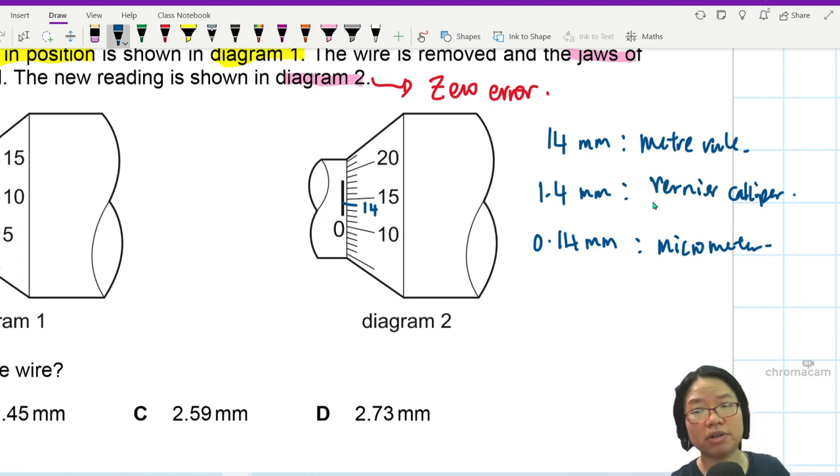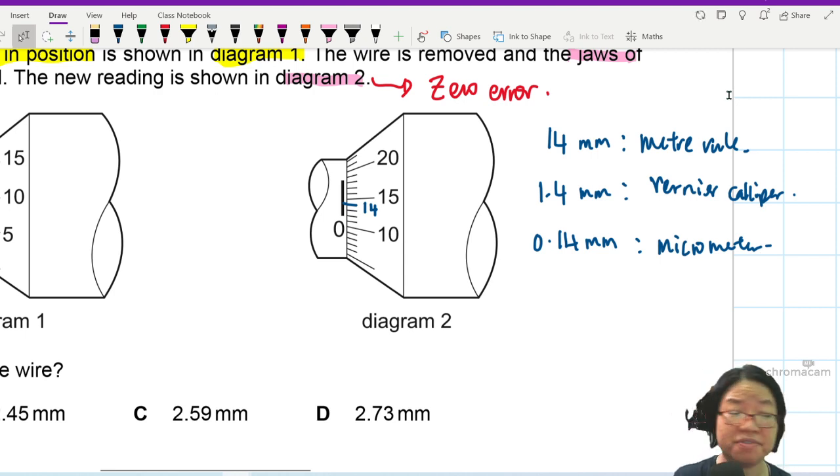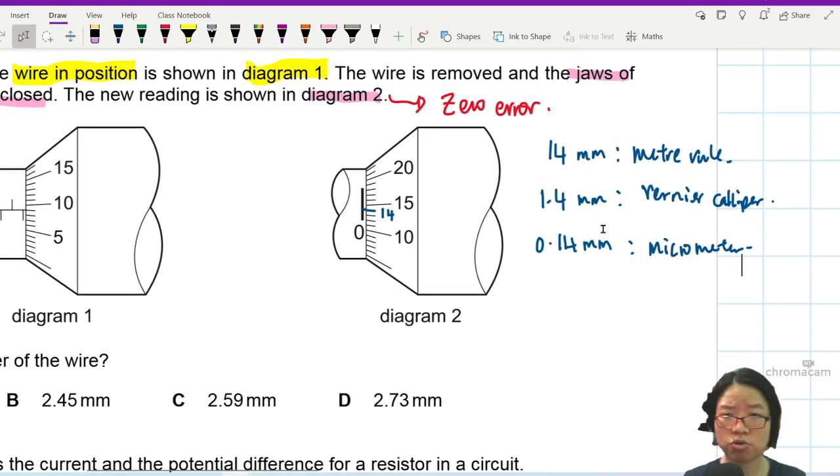So the way I recall it is I always start from a meter rule. Because if I forget or if I'm having a very blur morning, I always have a meter rule with me. So I can just look at it. Oh yeah, makes sense. Meter rule. And then we move one decimal point. That's my tip. If you remember, then you save yourself some time. So the zero error is 0.14 mm. I'm going to write this here. 0.14 mm.